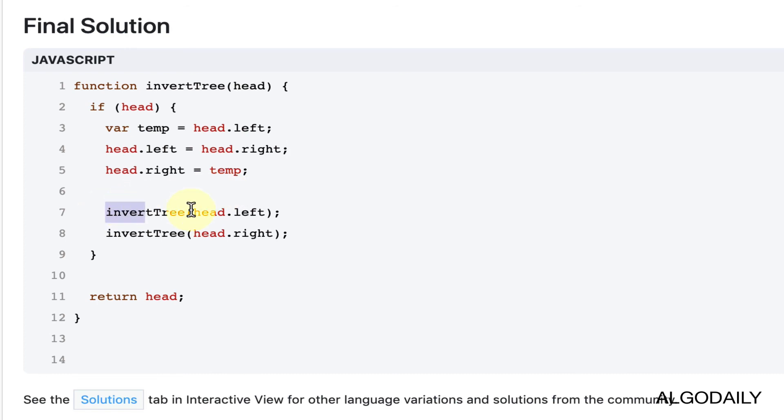And the next two lines are to do this recursively. So we'll do a swap of the left child's nodes, and then we'll do a swap of the right child's nodes, and we'll continue until there's no more root node, or there's no more node, which is our termination clause. And at that point, we'll return the head node.